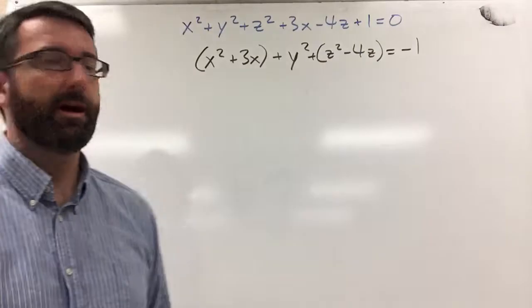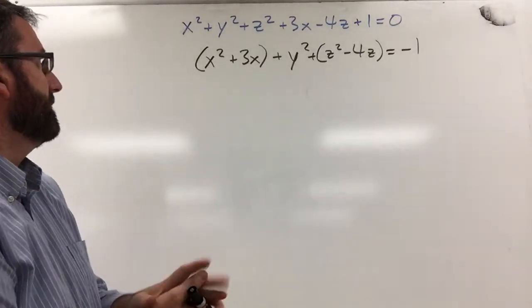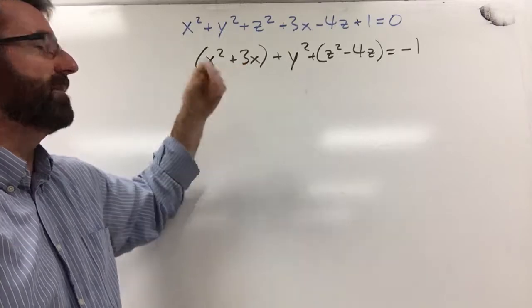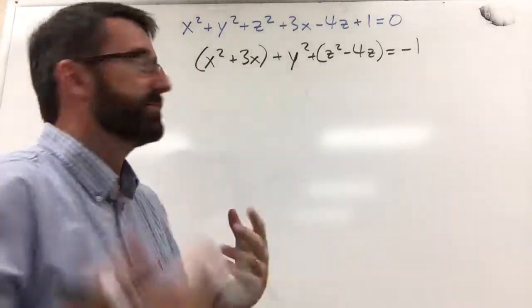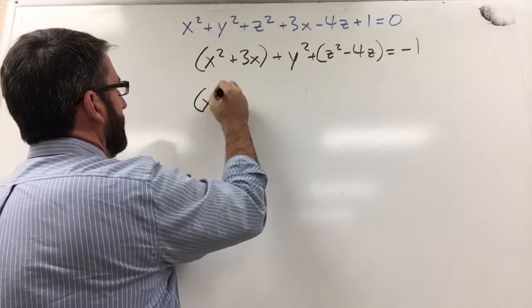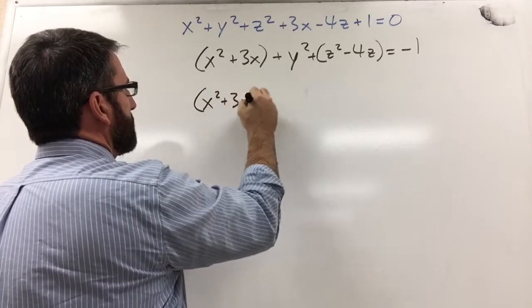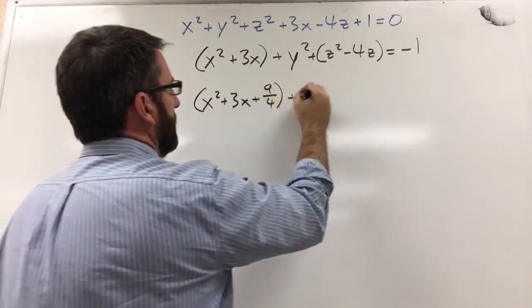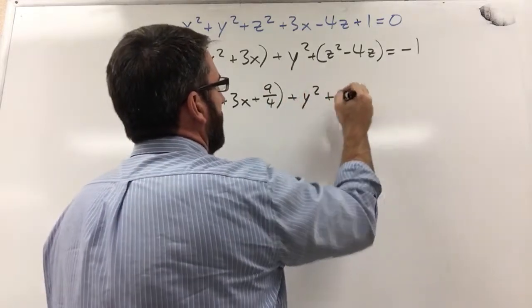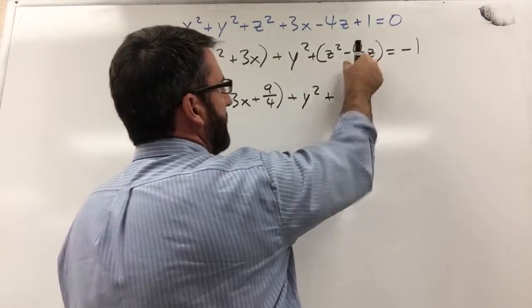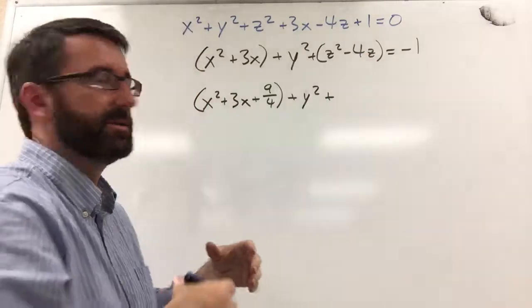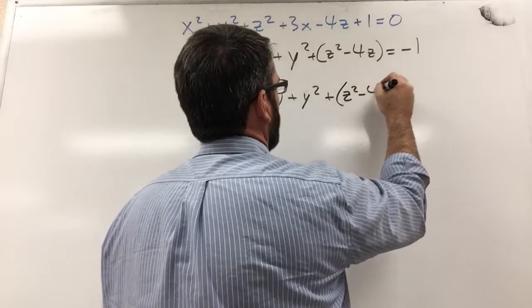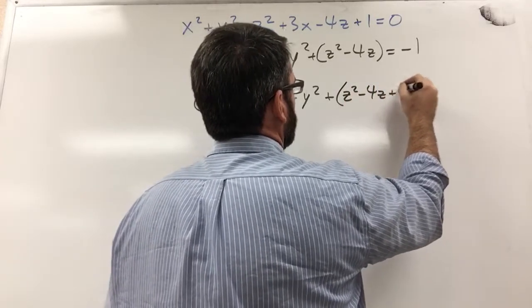Now let's complete the square on these two. To complete the square here, we're going to need 3 divided by 2 is 3 halves. 3 halves squared is 9 fourths. So let's add 9 fourths here. And then over here, negative 4 divided by 2 is negative 2 squared is 4. So this is going to be z squared minus 4z plus 4.